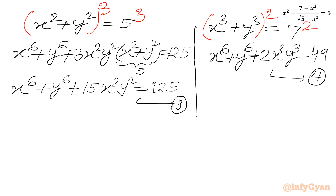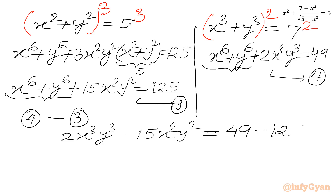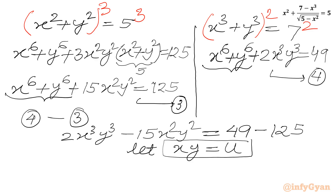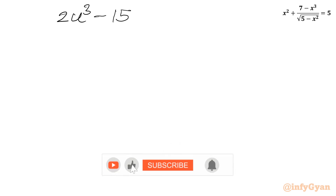Performing equation 4 minus equation 3, x⁶ + y⁶ cancels out, leaving 2x³y³ − 15x²y² = 49 − 125 = −76. Let u = xy, so this becomes 2u³ − 15u² + 76 = 0.